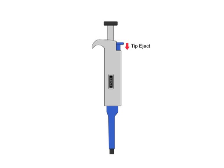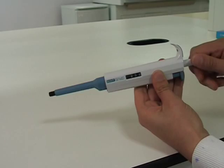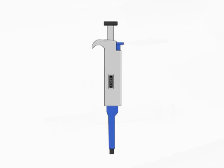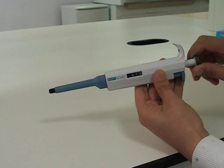Next, for a demonstration of pipetting. First, the volume is set. Next, the tip is fitted. It is important to get a good seal on the pipette tip to stop any leakage.